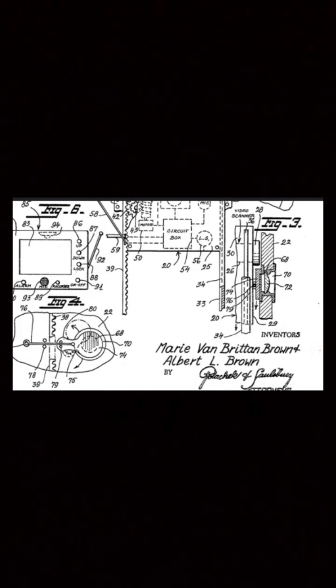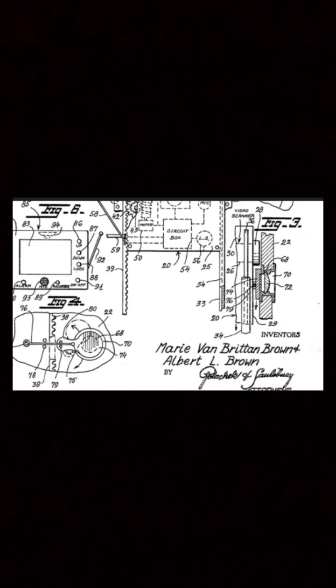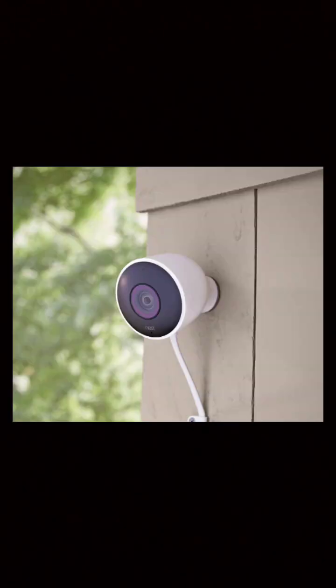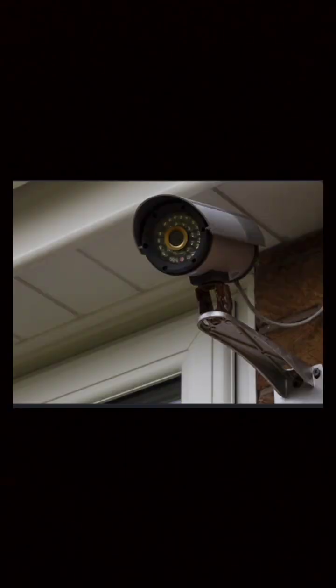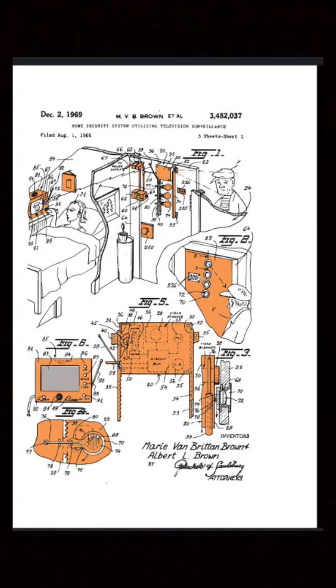The patent for the invention was filed in 1966, and it later influenced the modern home security systems that we use to this day. Brown's security system was the basis for the two-way communication and surveillance features of modern security.